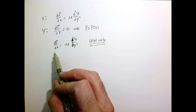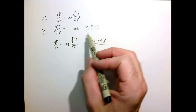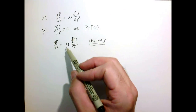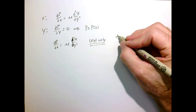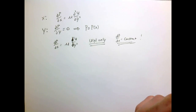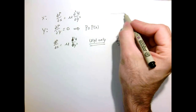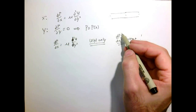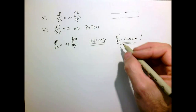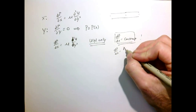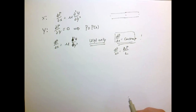Since u doesn't change in x, u is only a function of y, so we can write this as an ordinary derivative: d²u/dy². Now on the left we have a function of x, and on the right a function of y. The only consistent conclusion is that dp/dx must be a constant. Physically this makes sense for a very long channel: the pressure drop per unit length should be constant, so doubling the channel length doubles the pressure drop proportionally.